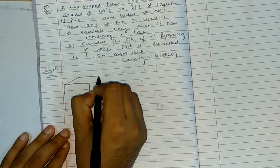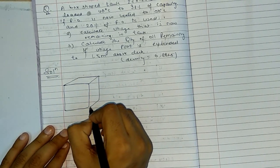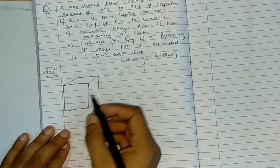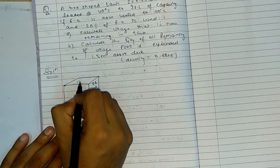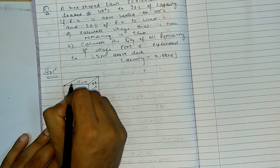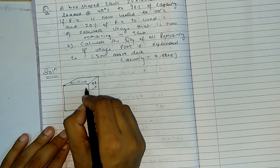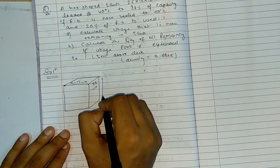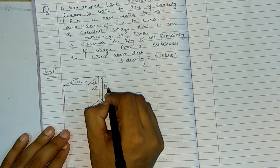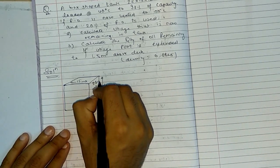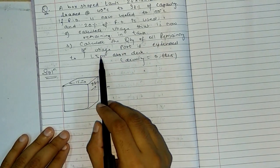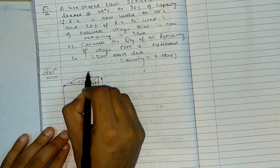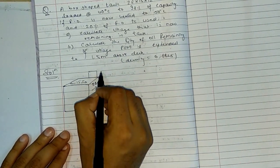Looking at the diagram: the tank dimensions are 28 meters long, 15 meters wide, and 12 meters depth. The ledge above deck is 1.5 meters.